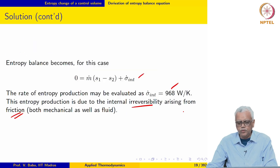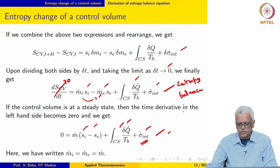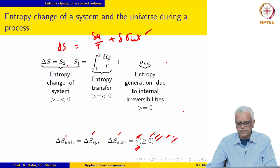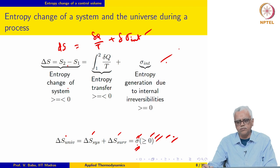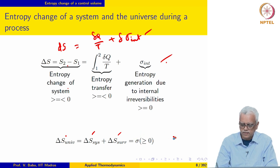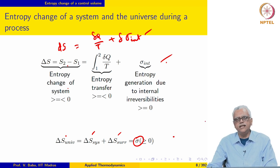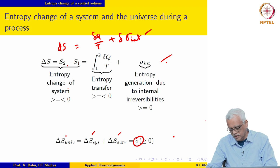We wrote down two expressions at the beginning of this lecture: one for the change in entropy of the system involving σ_int, and another for the change in entropy of the universe involving σ. Now we want to develop an expression for calculating the change in entropy of the universe as a result of a flow process.